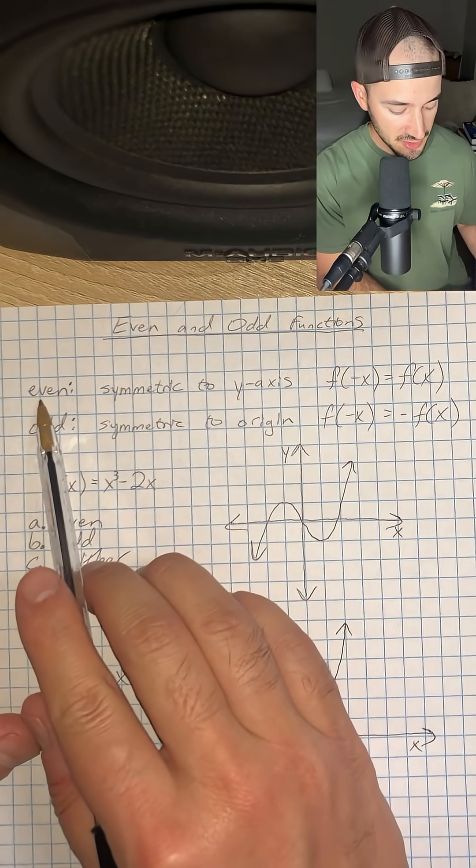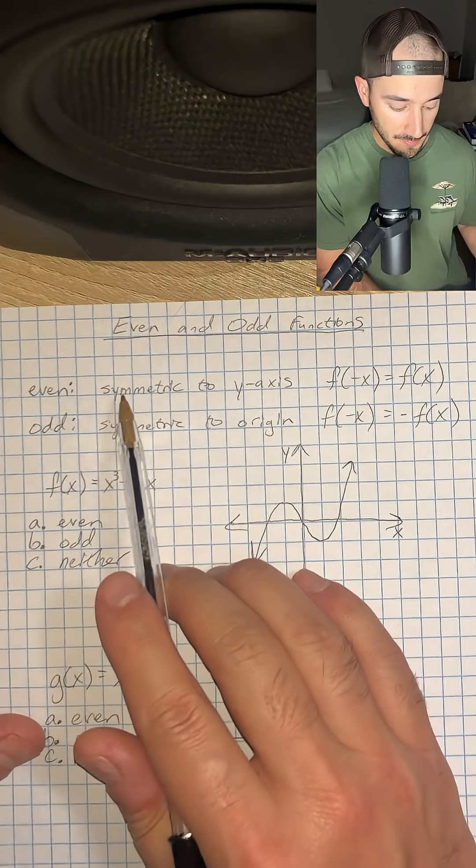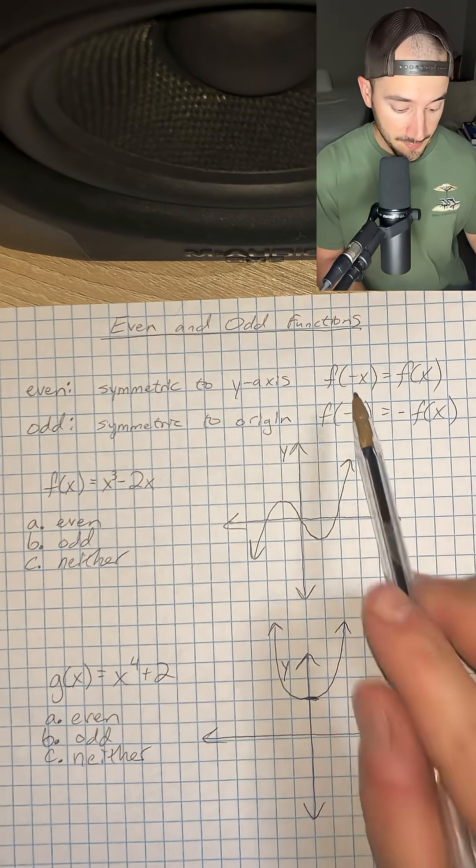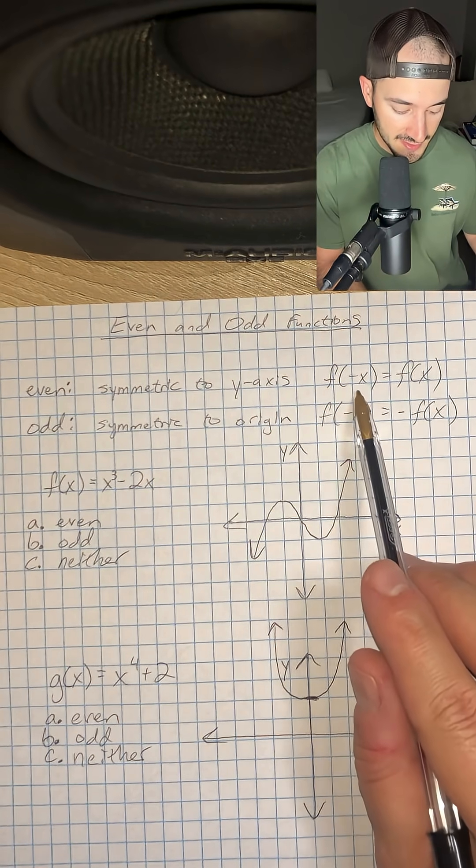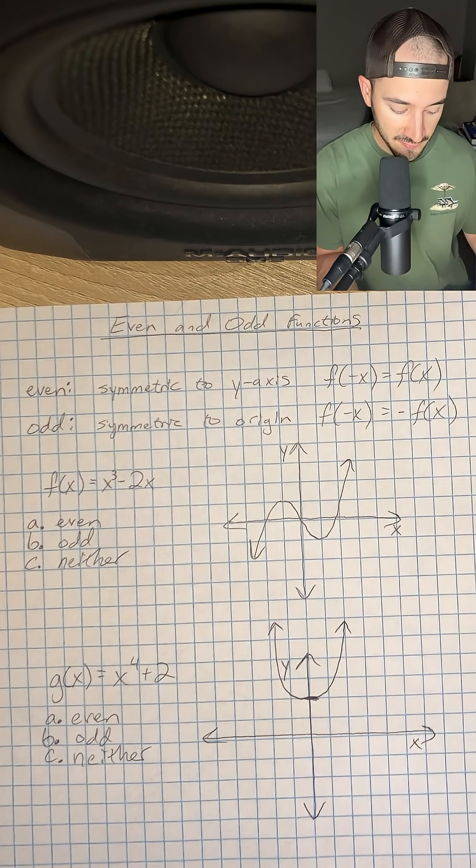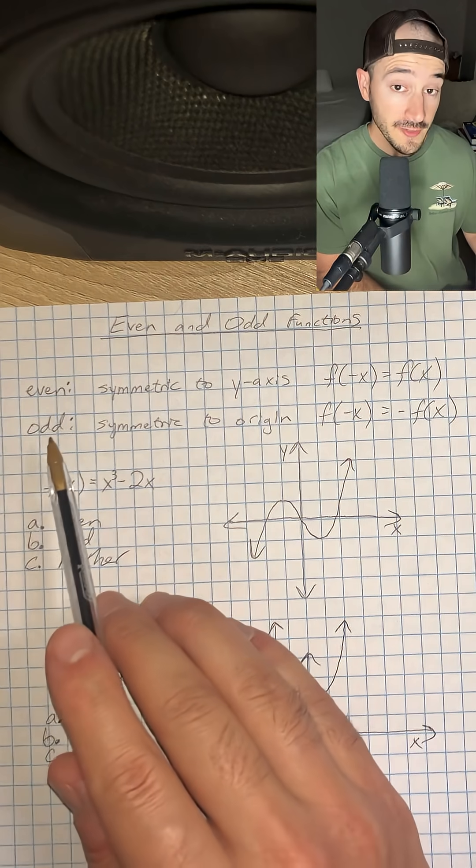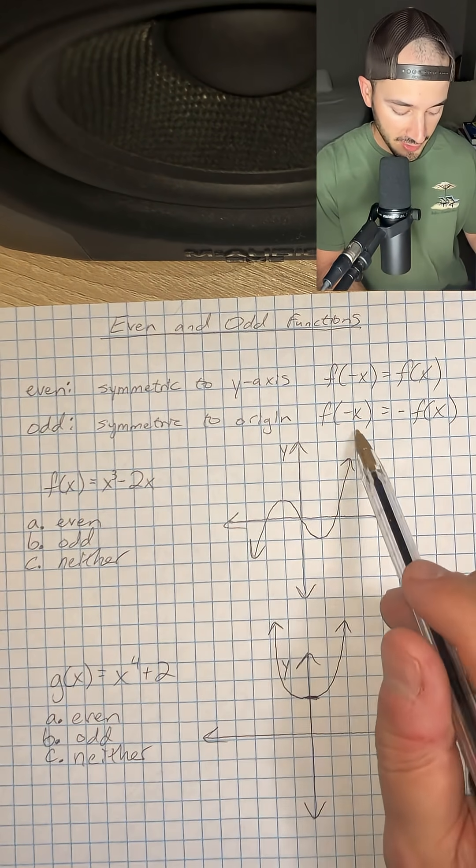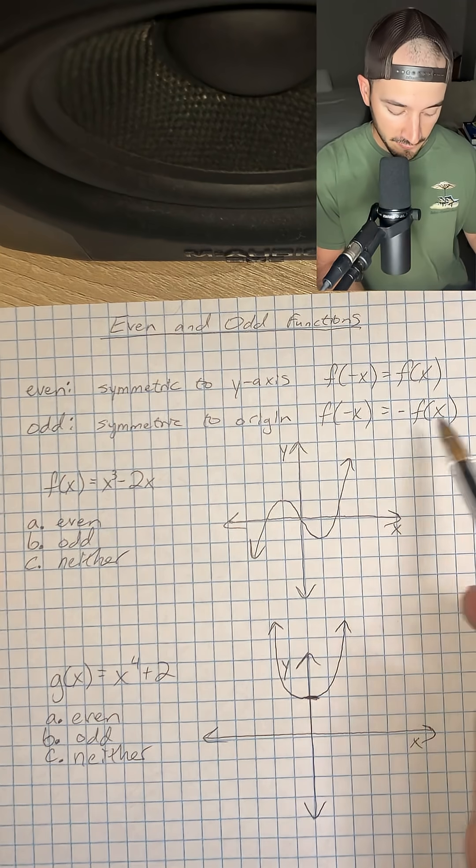An even function means that the function or graph is symmetric with respect to the y-axis. Algebraically, that means f of negative x is equal to positive f of x. For odd functions, that means they're symmetric about the origin and f of negative x is equal to negative f of x.